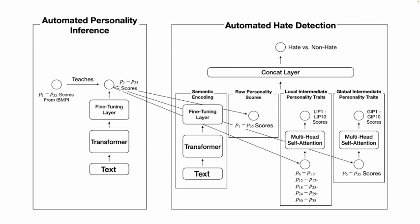In the local intermediate personality traits, we focus on identifying intermediate personality traits within each of the Big Five personality factors. In the global intermediate personality traits, we try to identify intermediate personality traits across different higher-level personality factors.